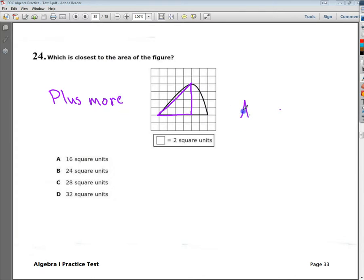I'm going to write the formula for a triangle down, 1 half base times height. I'm also going to notice that the legend tells me that each one of those units is 2 square units. So anything that I get from my formula, I need to multiply that whole thing by 2.